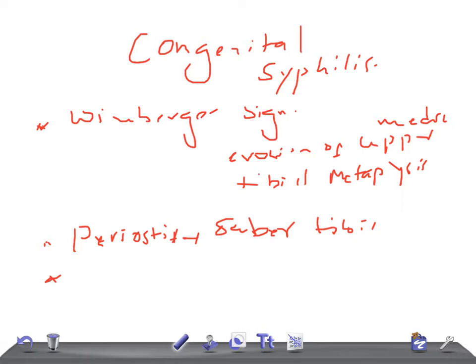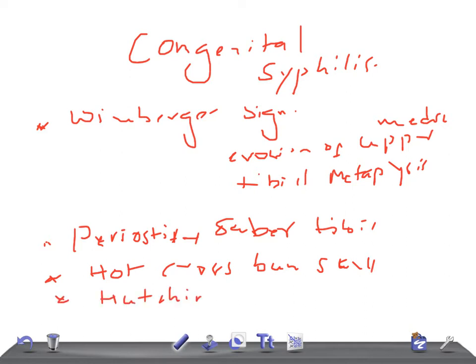Another sign is hot cross bun skull. Then we have Hutchinson's teeth and mulberry molar. And if it's a syphilis of the skull wall, then it shows a moth-eaten appearance.